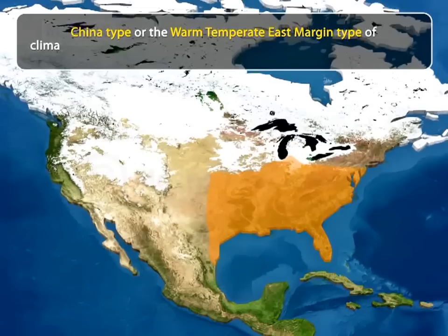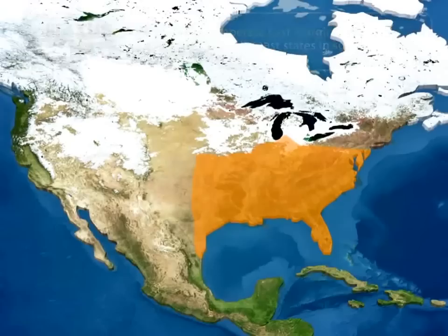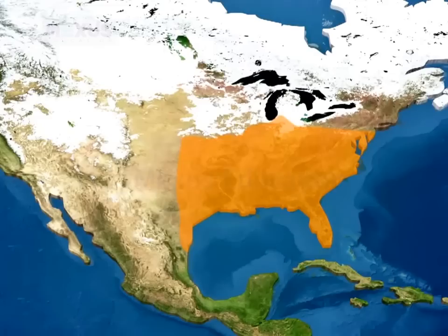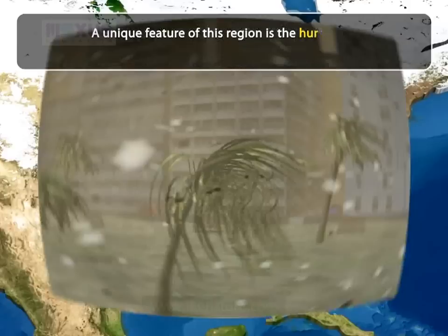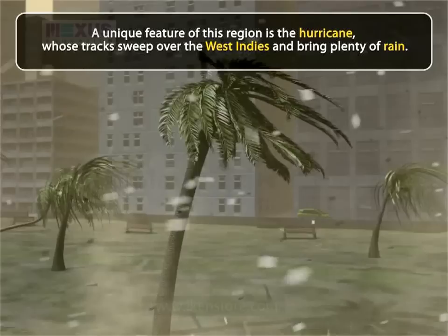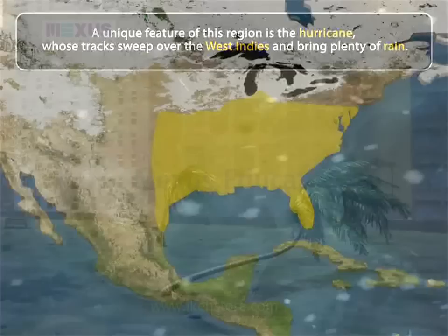The China type or the warm temperate east margin type of climate is found in Florida and the Gulf Coast states in southeast USA. It lies in the trade wind belt, with onshore winds that blow throughout the year. Rainfall decreases from east to west, becoming dry by the time it reaches the desert. A unique feature of this region is the hurricane, whose tracks sweep over the West Indies and bring plenty of rain. Hurricanes can be very destructive.